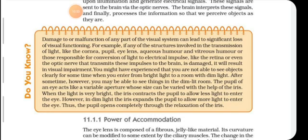Now we are going to start the three main topics of the defects of vision and correction of the eye. Sometimes the eye may gradually lose its power of accommodation, and the person cannot see objects clearly and comfortably. Vision becomes blurred due to refractive defects of the eye. There are three common refractive defects of vision: Myopia or Nearsightedness, Hypermetropia or Farsightedness, and Presbyopia.